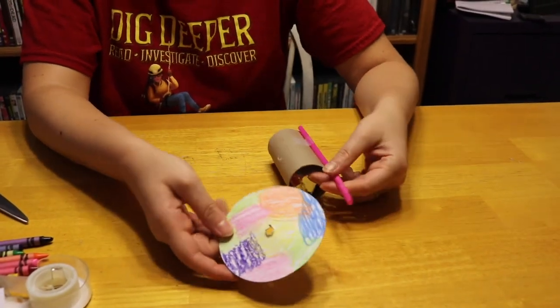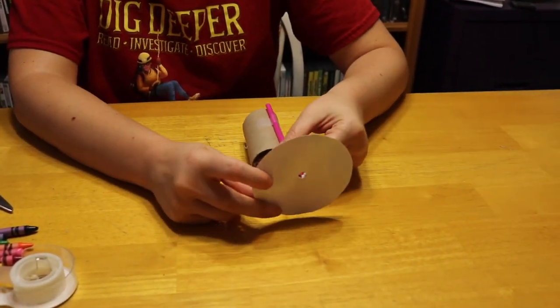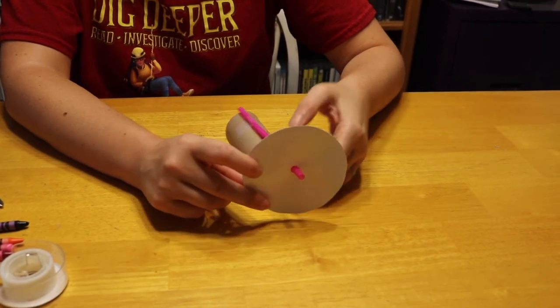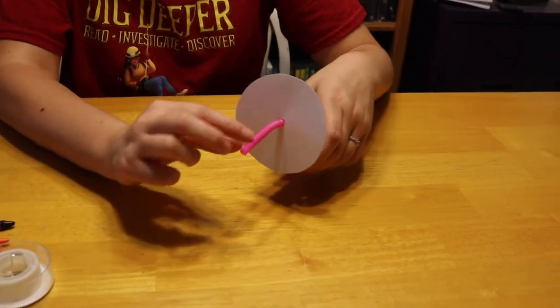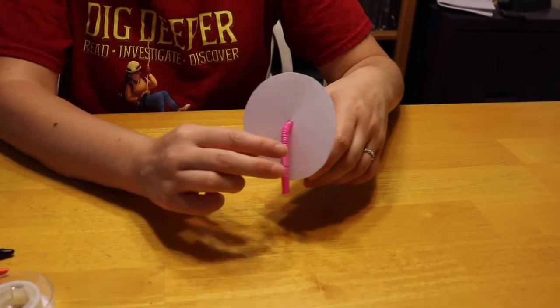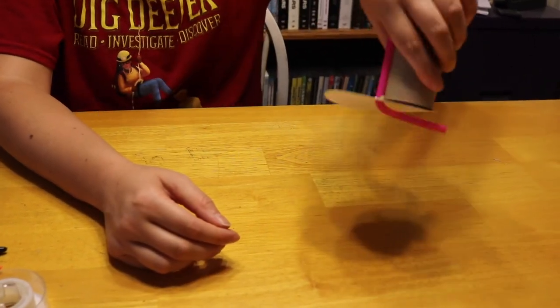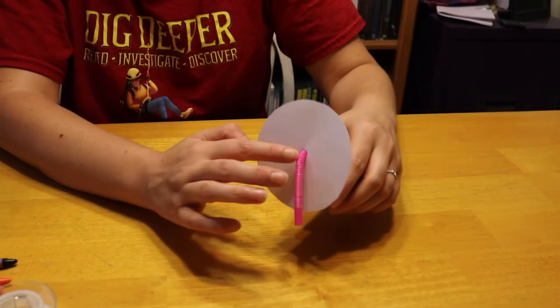Alright, and our last step is just to put this through the hole. And then the reason it was important to have that twisty part is you're going to use that to kind of secure your thing so it doesn't fall off your circle.